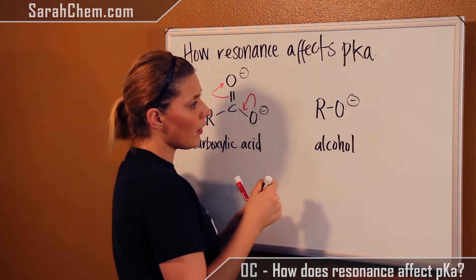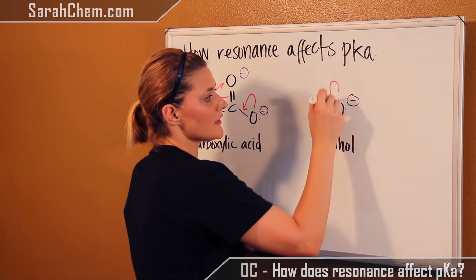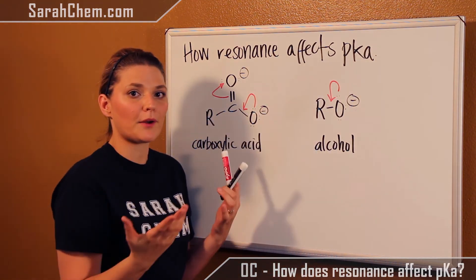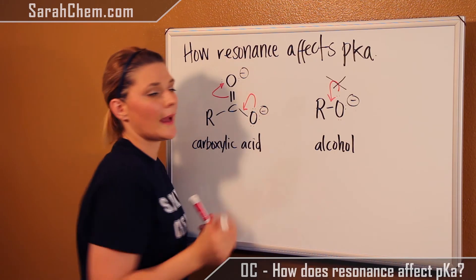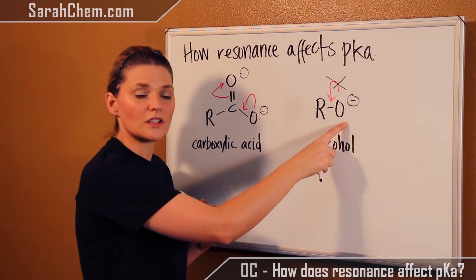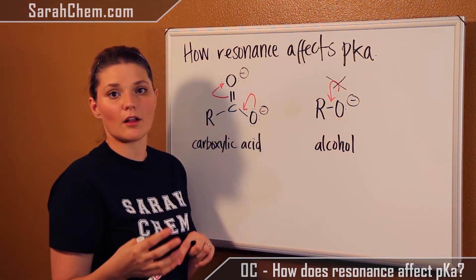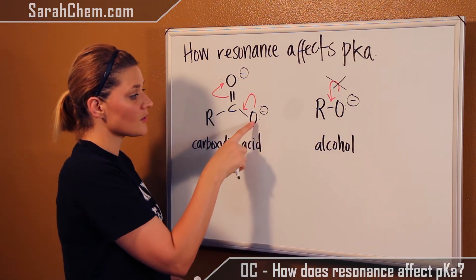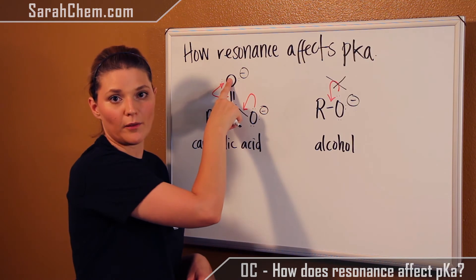Whereas in the case of alcohol, we can't push these electrons down because the R group can't break any of its sigma bonds. So this cannot happen, meaning that this oxygen is left holding the negative charge all by itself, which is not as stable as when this oxygen is able to share with another oxygen.